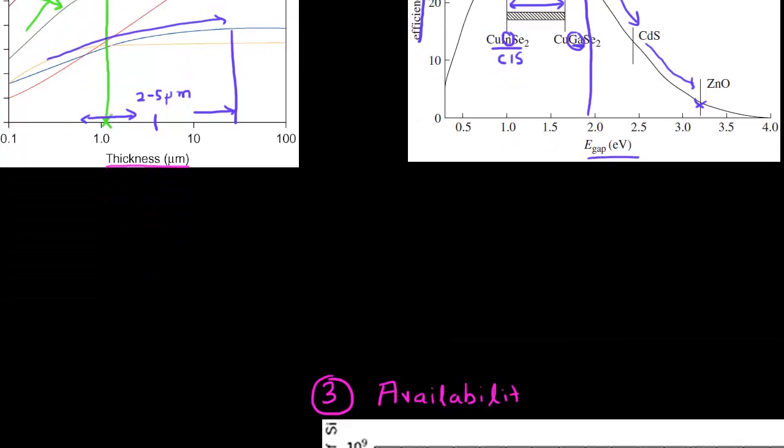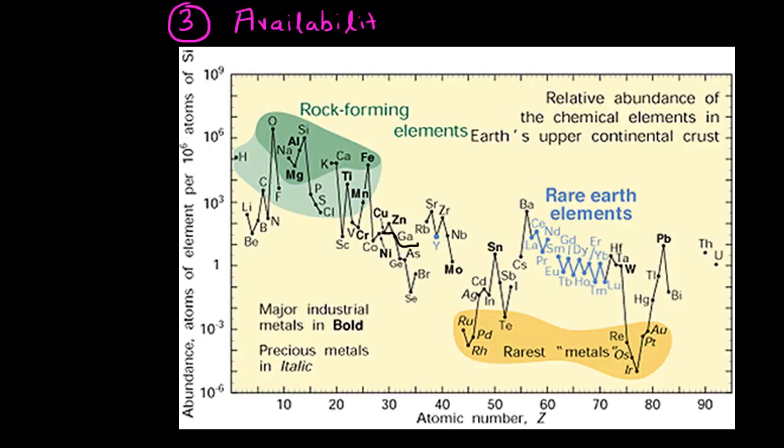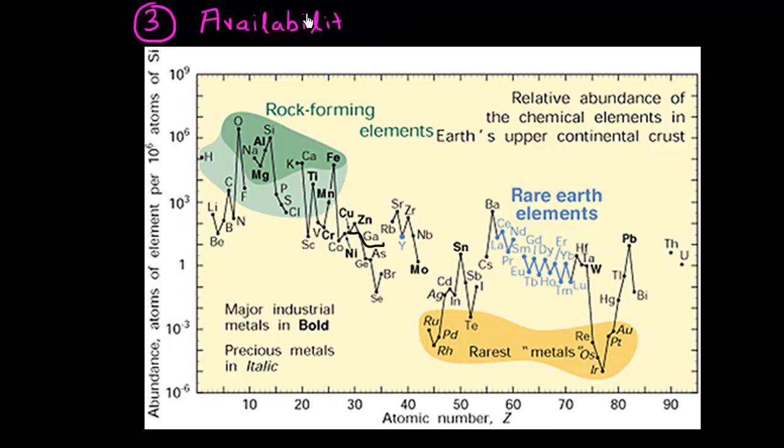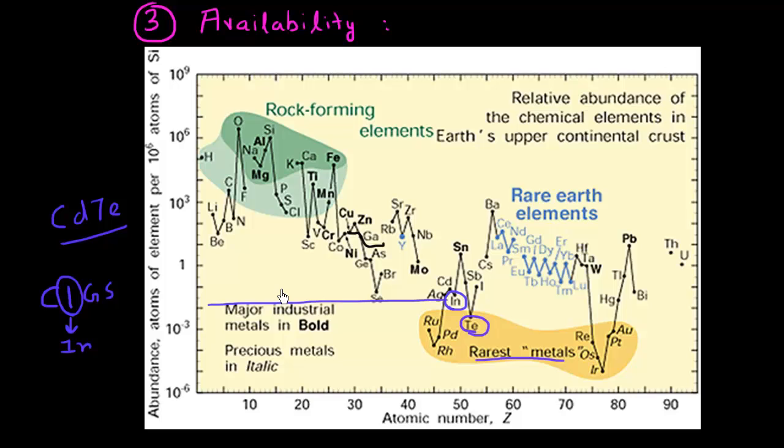The third and final criteria which I would recommend for choosing this material is look at what is the availability, what is the availability of these materials in the crust of the earth and how easily can they be extracted. For example, cadmium telluride is very pervasively or very actively used for making these thin film solar cells. But if you look over here, tellurium is one of the rarest available materials in the crust of the earth. So of course that is not a good sign. Similarly for CIGS-based cells, the I stands for indium. And again you see that indium is starting to appear in red over here where it has very low concentration present in the crust of the earth.